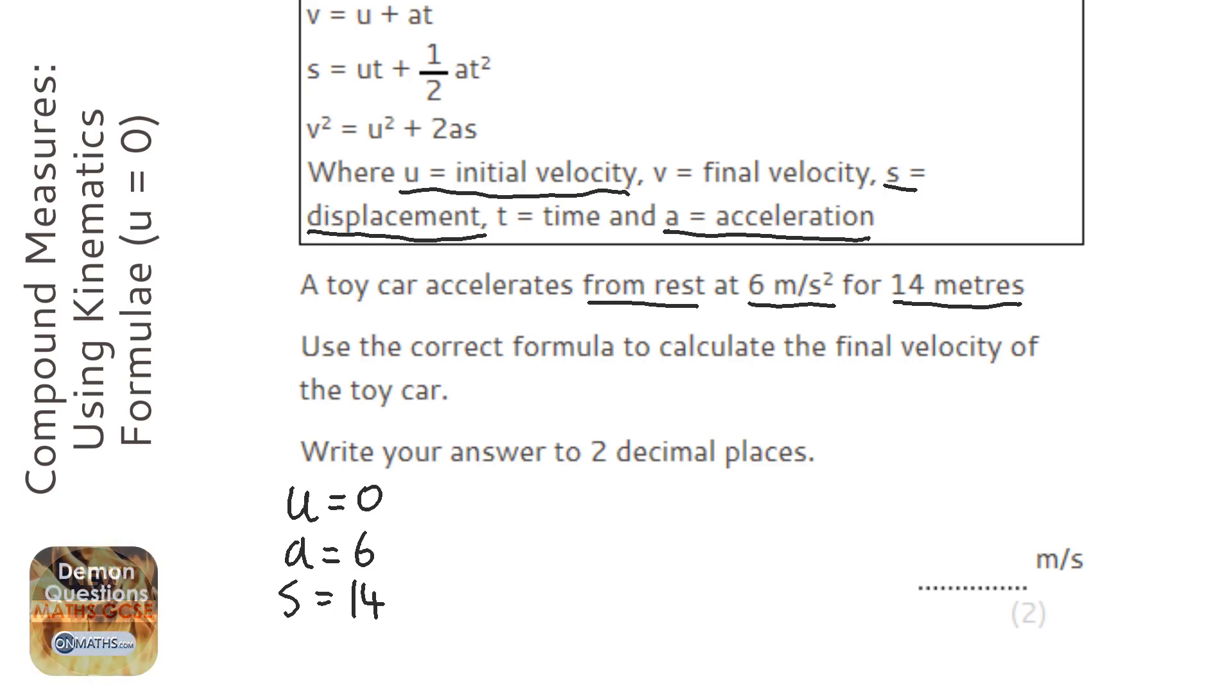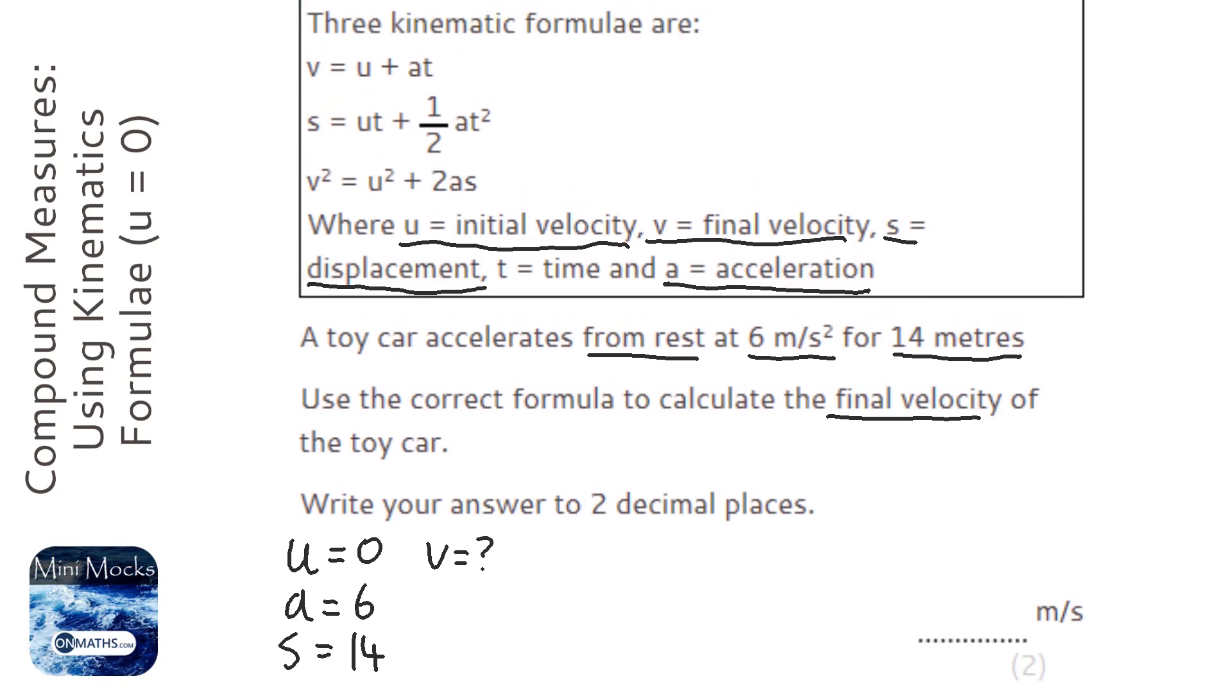Okay, so work out the correct formula to calculate the final velocity. So we're asked for V, so we're looking for V equals question mark. Okay, so which of these three have U, A, S, and V? I think it's going to be this one here, because the other two have T, and we're not asked for T, and we're not given T, so we won't be able to work out what T is.